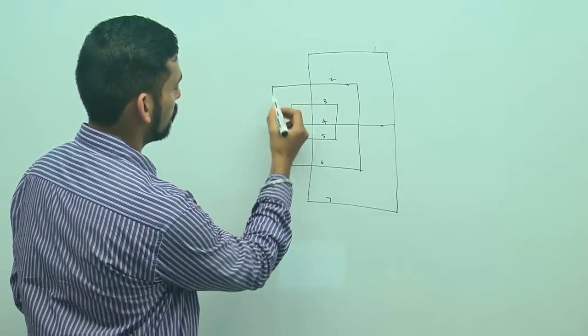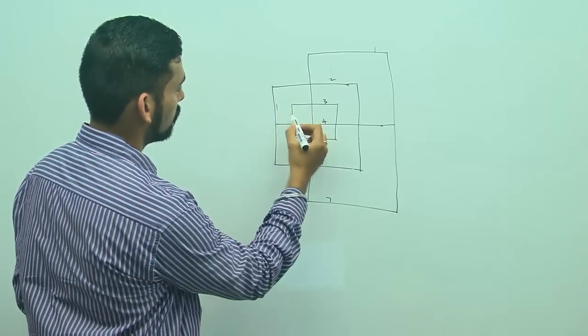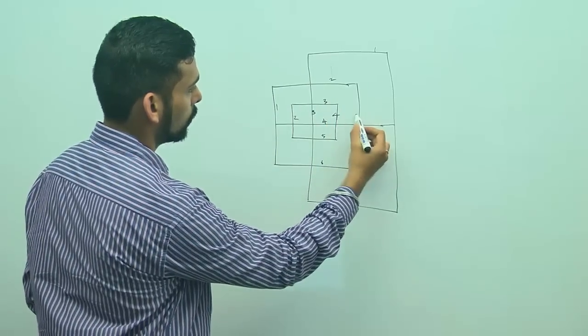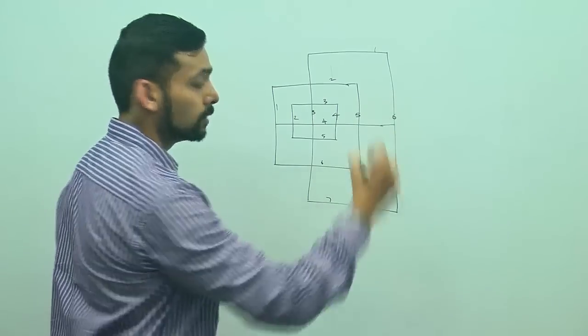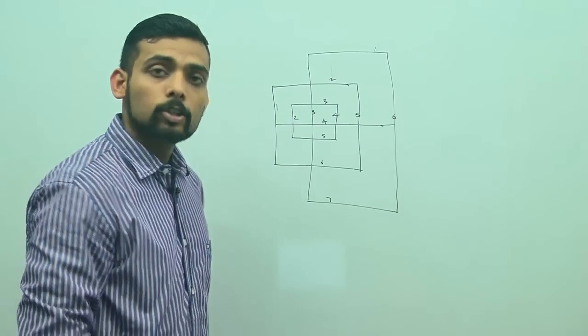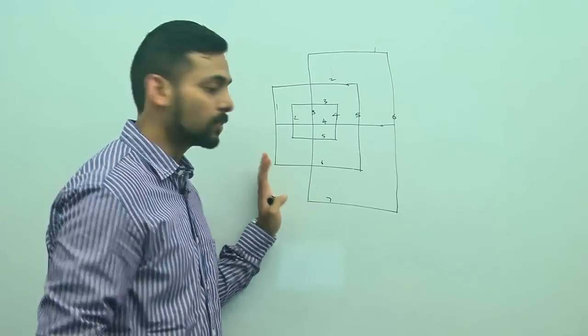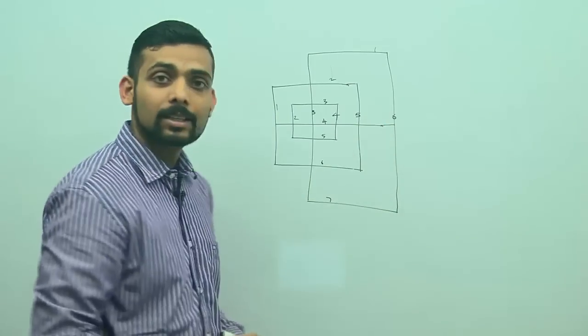Now let me count the number of vertical lines. I have 1, 2, 3, 4, 5, and 6 vertical lines. So the total number of lines that I have which are essential in making this figure are 7 plus 6, 13 lines.